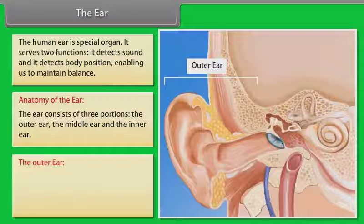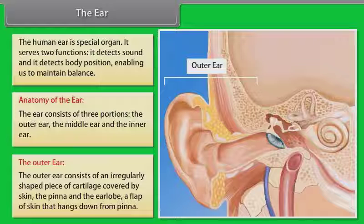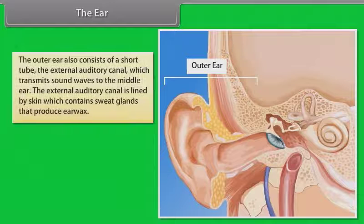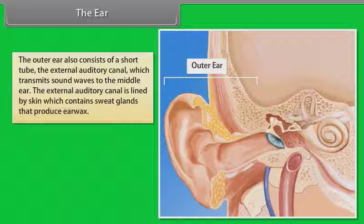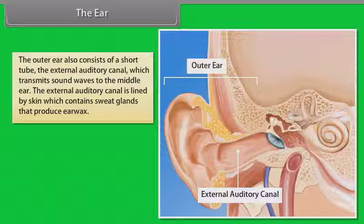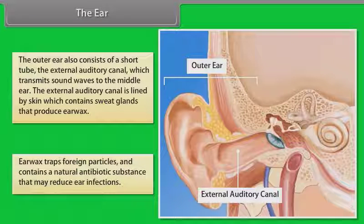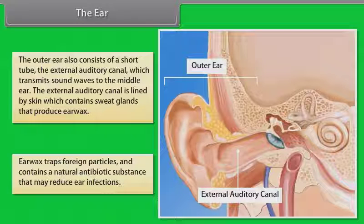The outer ear consists of an irregularly shaped piece of cartilage covered by skin called the pinna and the earlobe, a flap of skin that hangs down from the pinna. The outer ear also consists of a short tube called the external auditory canal which transmits sound waves to the middle ear. The external auditory canal is lined by skin which contains sweat glands that produce earwax. Earwax traps foreign particles and contains a natural antibiotic substance that may reduce ear infections.